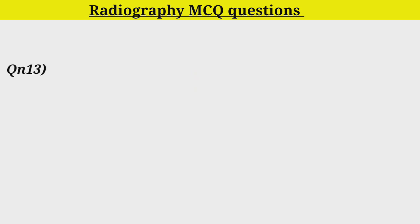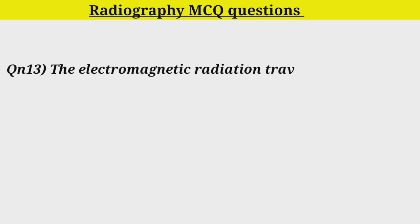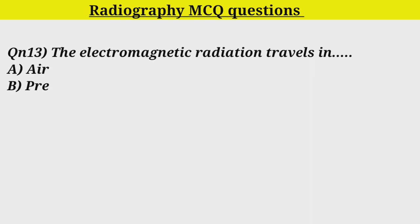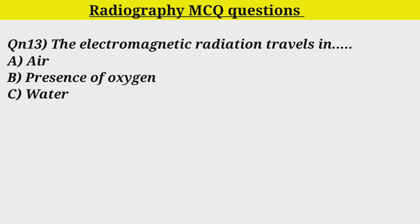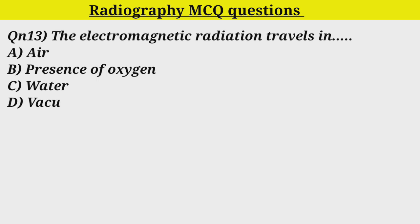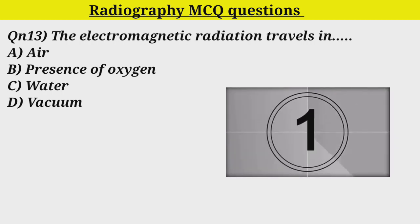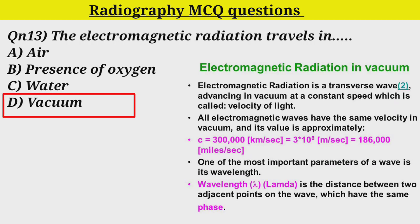Q13. Electromagnetic radiation travels in: Option A. Air. Option B. Presence of oxygen. Option C. Water. Option D. Vacuum. Correct answer is Option D. Vacuum.